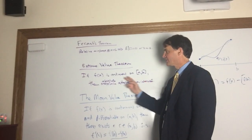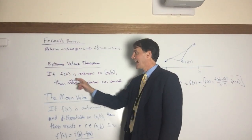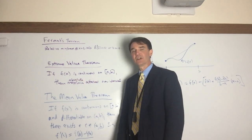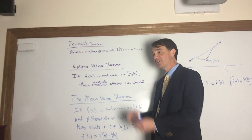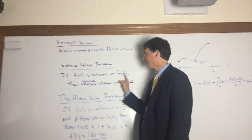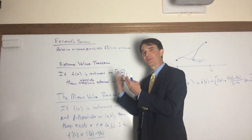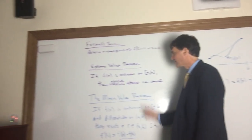The Extreme Value Theorem says if you have a continuous function f over a closed interval [a,b], then the absolute max and min are attained on the interval. That's the theorem that tells us that if we have a closed interval and we're looking for the largest or smallest value of the function, we take the value at the endpoints and at the critical values, and we know we found the absolute max and min over that interval.